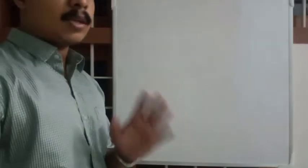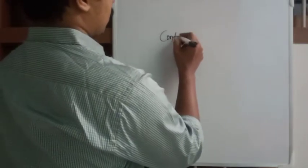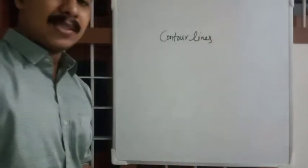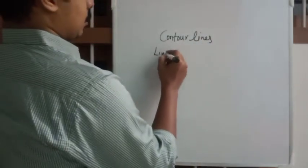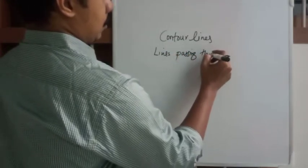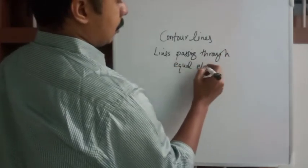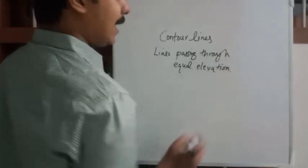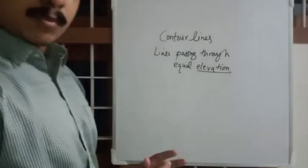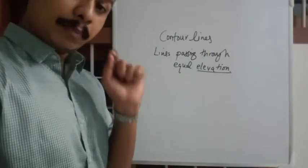So welcome back. Today we are talking about contour lines. Contour lines are the lines passing through equal elevation. Isotherms are lines passing through equal temperature, isobars are lines which pass through equal pressure.